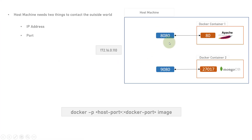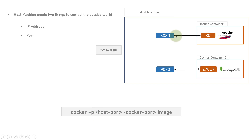Port 8080 was replaced by 9002, and whenever a request comes to port 9002 it delegates that request to port 80 inside the container. If port 8080 had been connected, all requests to 8080 would be delegated to port 80 of Docker container 1. The -p flag is important so that a connection can be made between the host machine port and the docker container port. That's all about this video — hope you like it. Please subscribe to the channel and share these videos. Thank you.